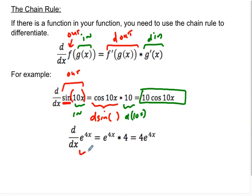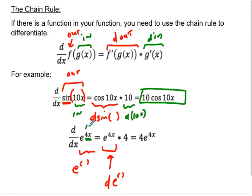For e to the 4x, the outside function is e to the stuff. The derivative of e to the stuff is e to the stuff. Then I differentiate the inside function, which is 4x, giving a derivative of 4. So I get e to the 4x times 4, which I write as 4e to the 4x.